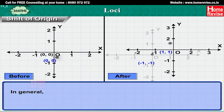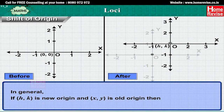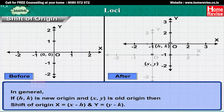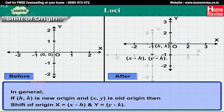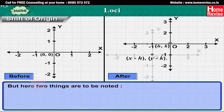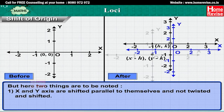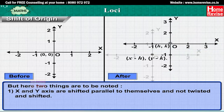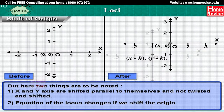In general, if (h, k) is the new origin and (x, y) are the old coordinates, then the shift of origin gives: X = x − h and Y = y − k. Two things are to be noted: one, the X and Y axes are shifted parallel to themselves and not twisted; and two, the equation of the locus changes when we shift the origin.